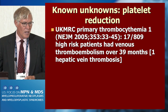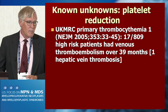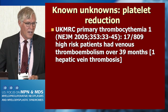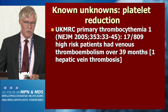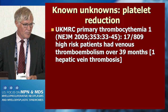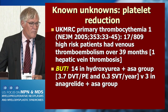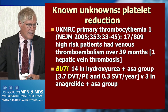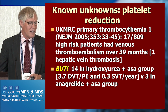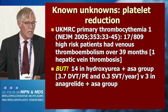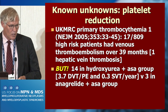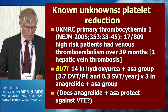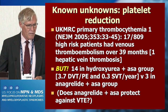For platelet reduction, the Primary Thrombocythemia 1 study found 17 out of 809 high-risk patients had venous thromboembolism over 39 months — one hepatic vein thrombosis, no other splanchnic vein thromboses. There were 3.7 DVTs or PEs and 0.3 splanchnic vein thromboses per year in the hydroxyurea plus aspirin group versus only 3 in the anagrelide plus aspirin group. This raises the question: does anagrelide plus aspirin protect against VTE, or does hydroxyurea plus aspirin promote venous thromboembolism?